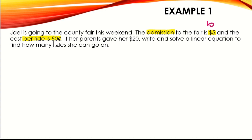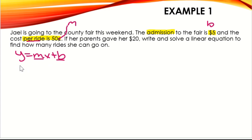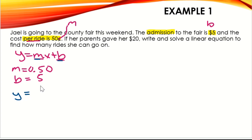It is 50 cents per ride, so that is going to be our rate of change, which is our m. Slope-intercept form is y equals mx plus b, so we just need to fill in m and b. Our m is $0.50 and our b is $5. So our equation is y equals 0.50x plus 5.